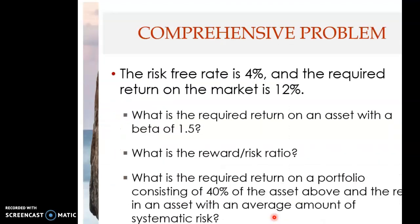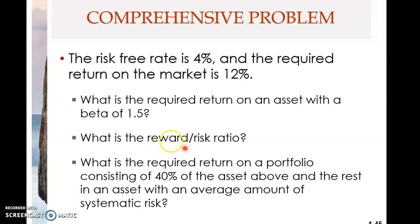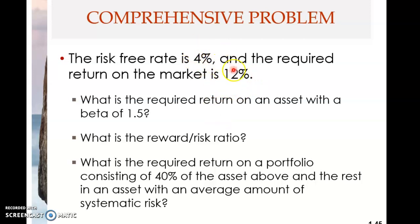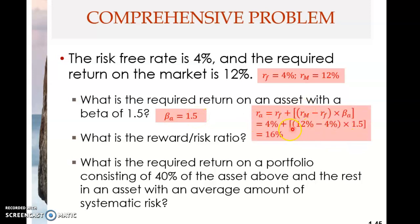Now we move back to the slides to the comprehensive problem. You are given a risk-free rate of 4% and a required return on the market of 12%. What is the required return on an asset with a beta of 1.5? You are given rf and rm, so you apply the CAPM formula: 4% plus (12% minus 4%), which is 8%, multiplied by 1.5.